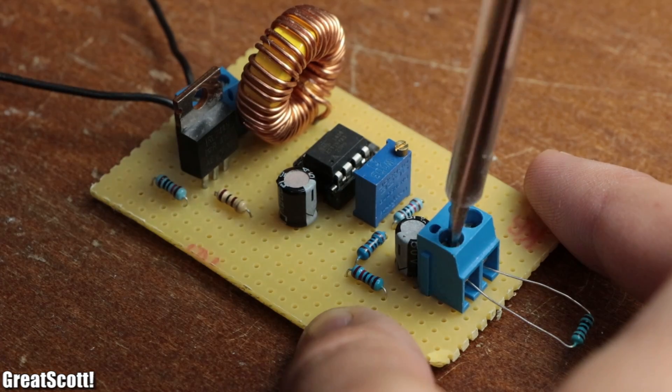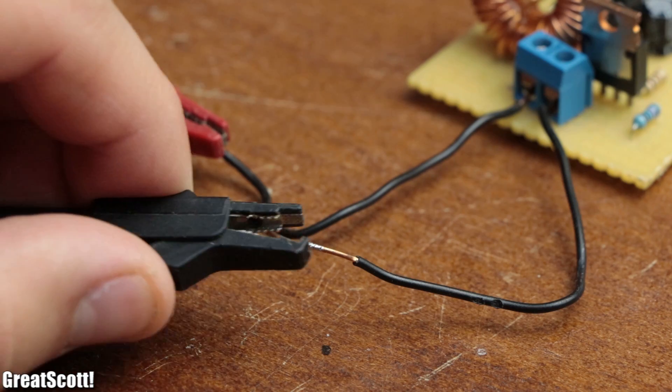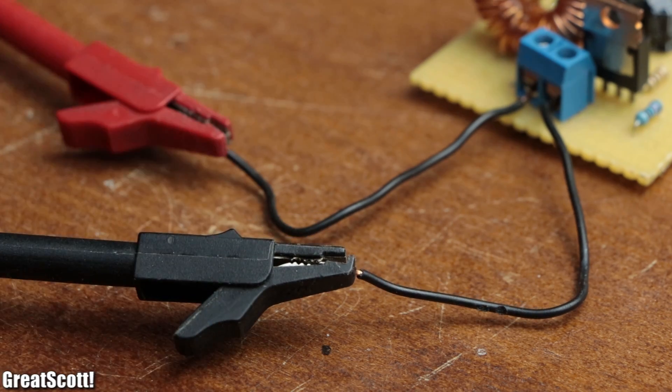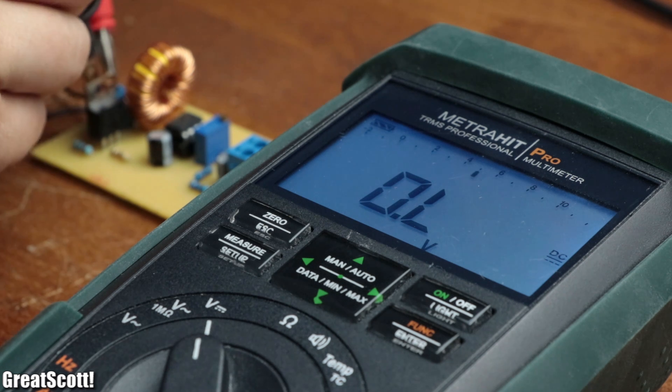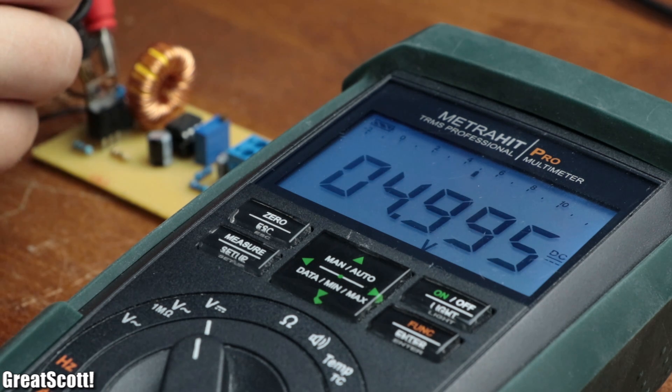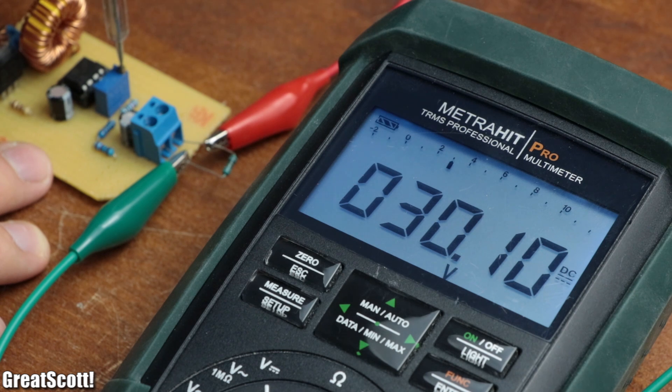What you see here is a so-called boost converter that I built in a previous video. Back then I explained in detail the job of each component in the circuit, so that the final product was capable of boosting a low 5 volt voltage to a high 30 volt voltage.